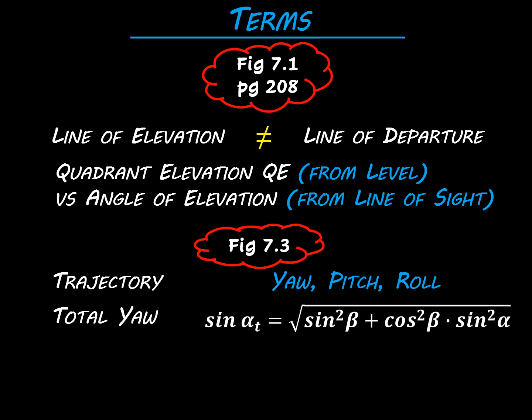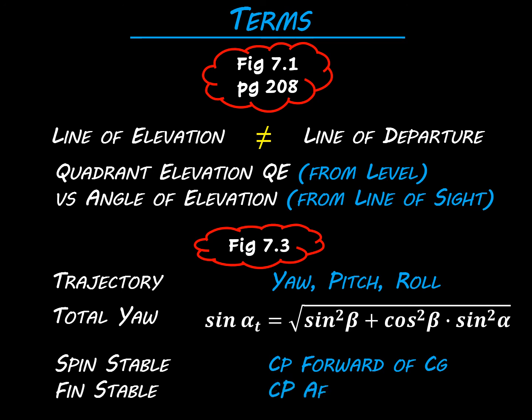A projectile can be spin stabilized — like a rifle bullet — where the center of pressure is forward of the center of gravity. Alternatively, a projectile can be fin stabilized, where the center of pressure is aft of the center of gravity and fins are used to maintain stability. For example, a sabot round on a tank has fins on the back to keep it stabilized because it is not spinning.